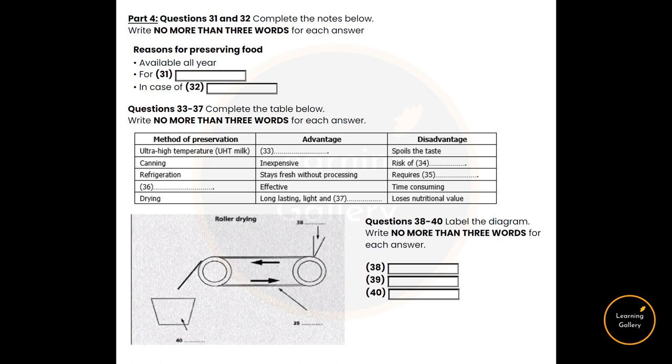There are a number of methods of preserving food which involve both high and low temperatures, chemicals, irradiation and drying. Let's have a look at these in turn.